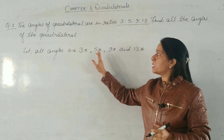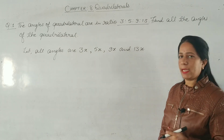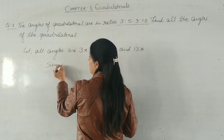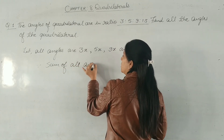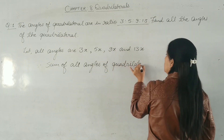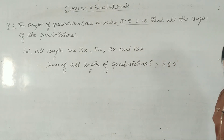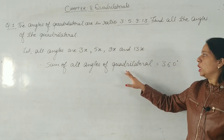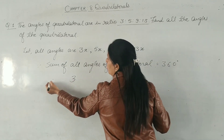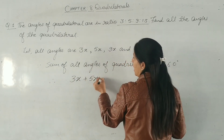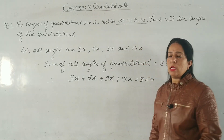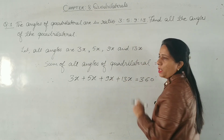We have to find the value of x so that we can multiply x with all the numbers and find the exact angles. We know that the sum of all angles of a quadrilateral is equal to 360 degrees. Therefore: 3x + 5x + 9x + 13x = 360 degrees.